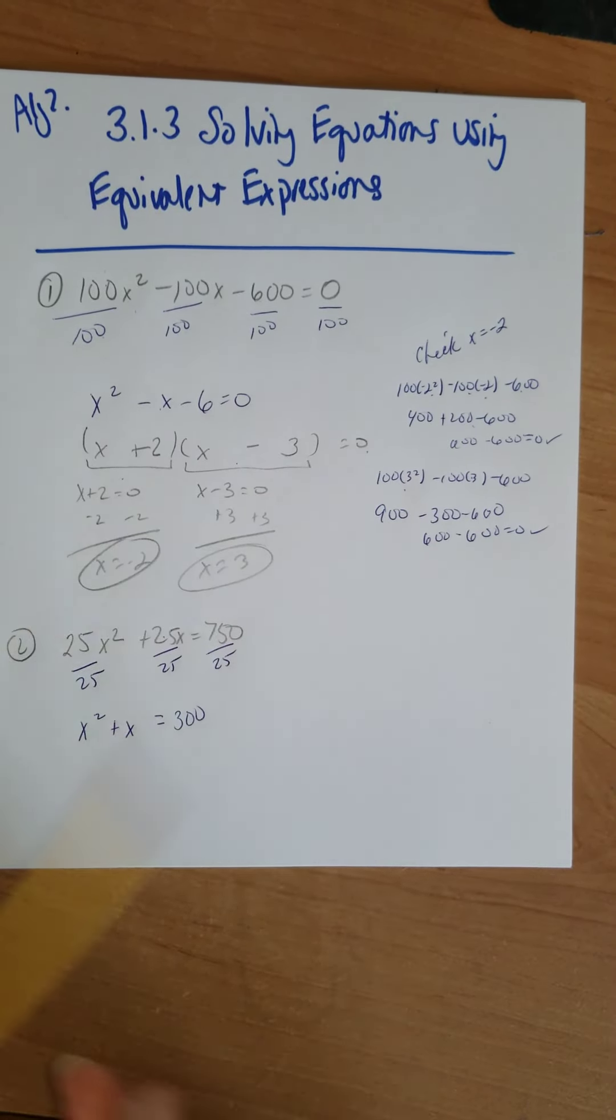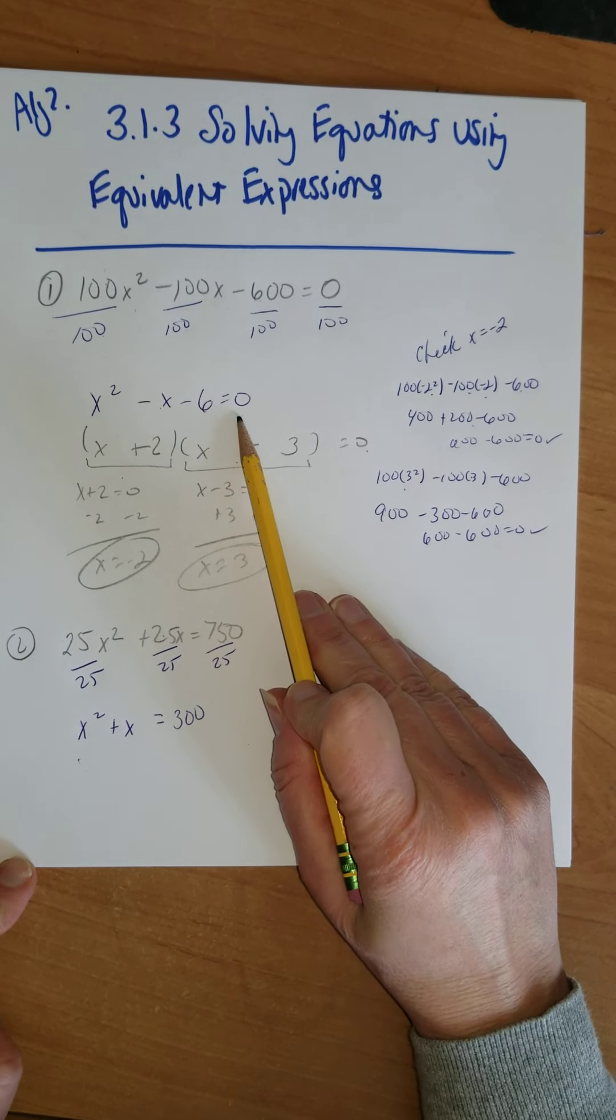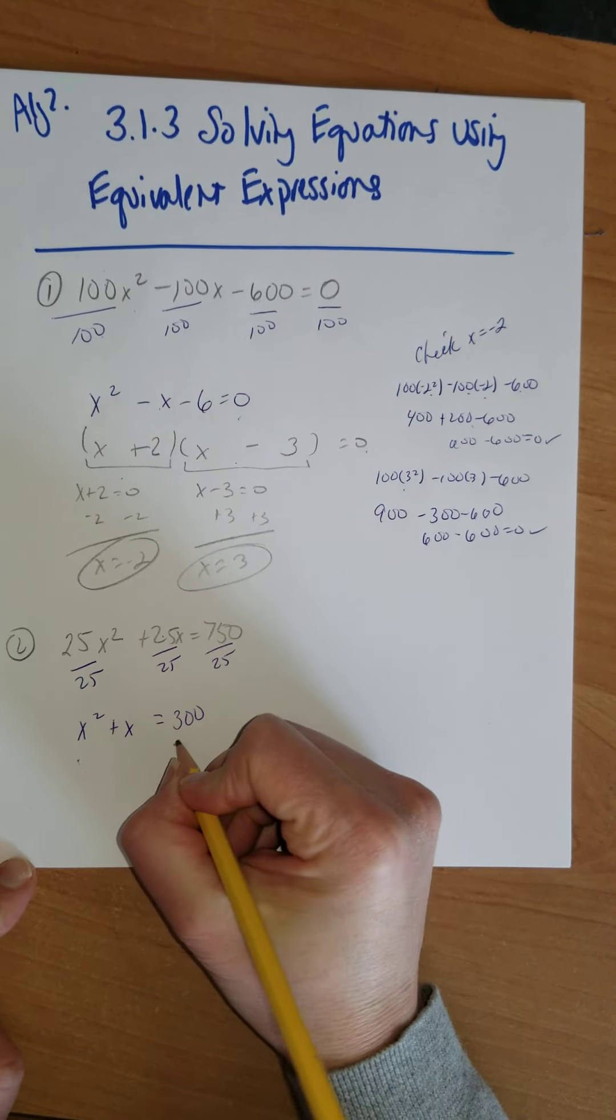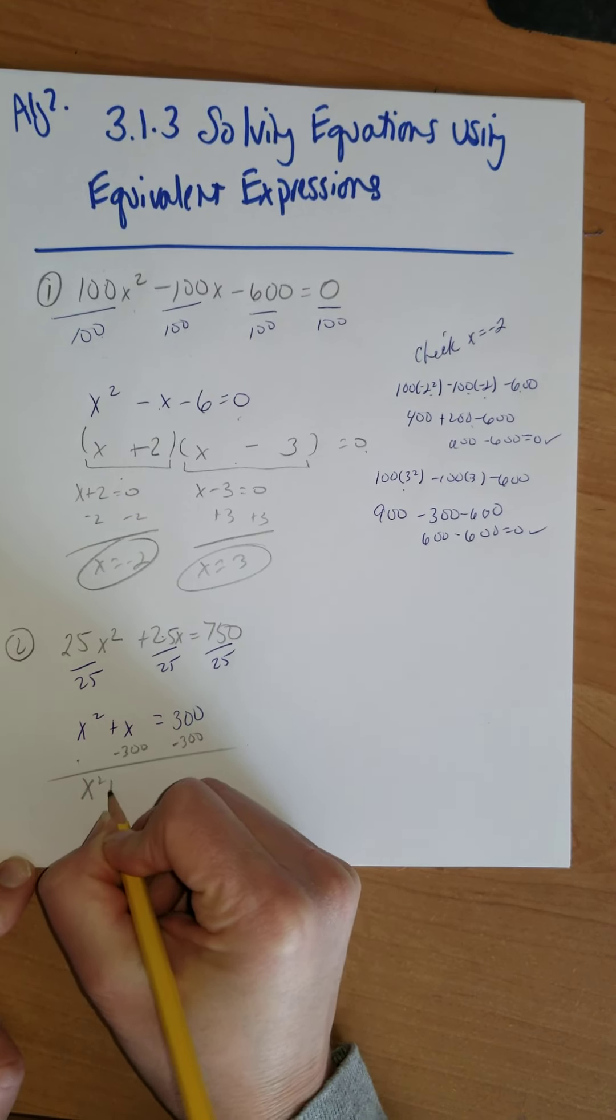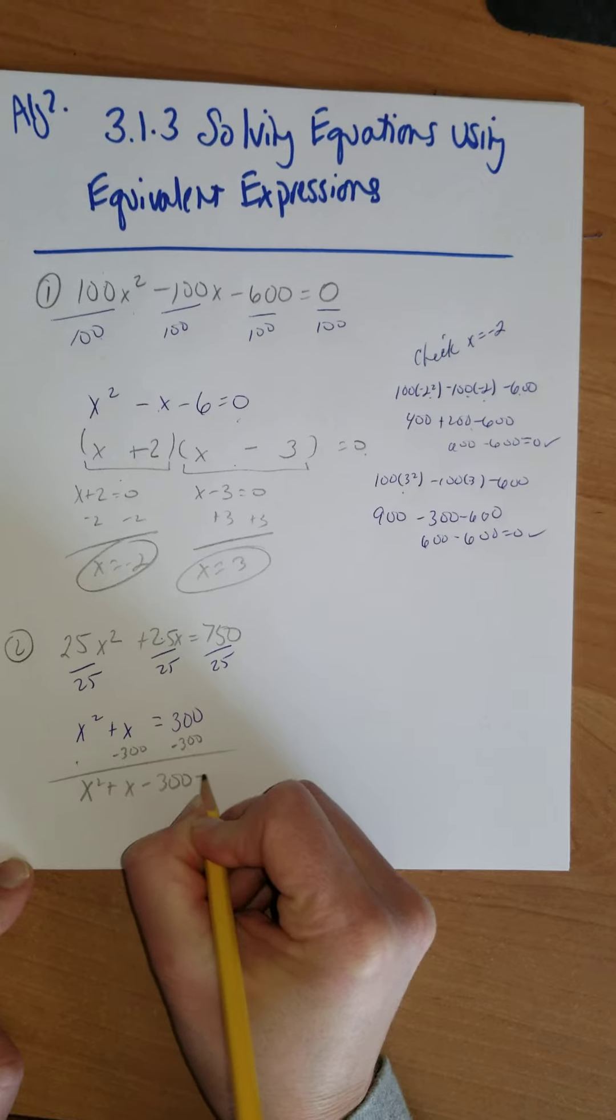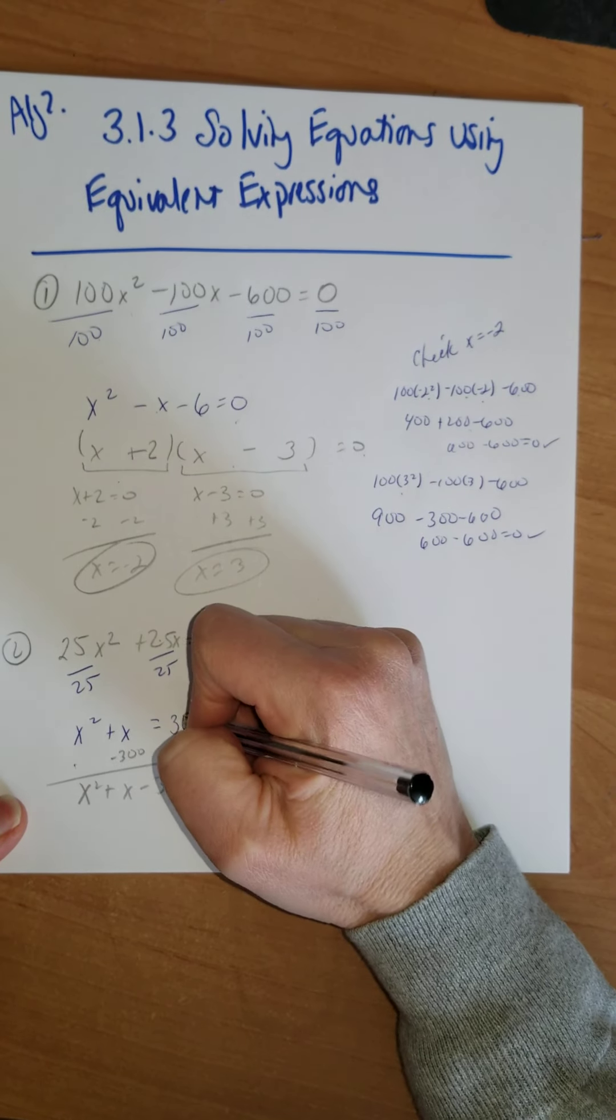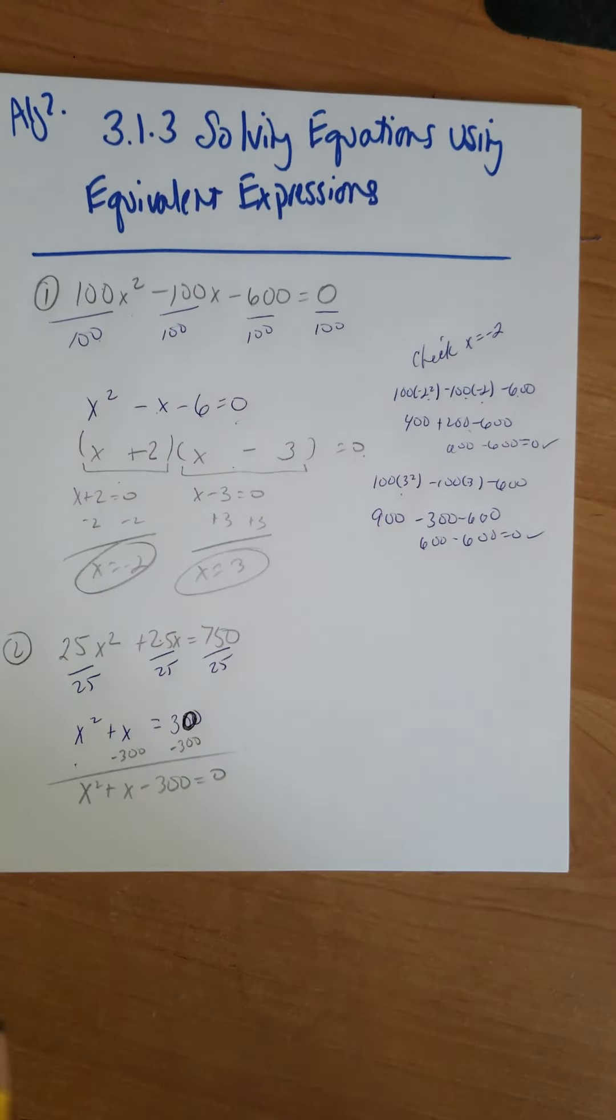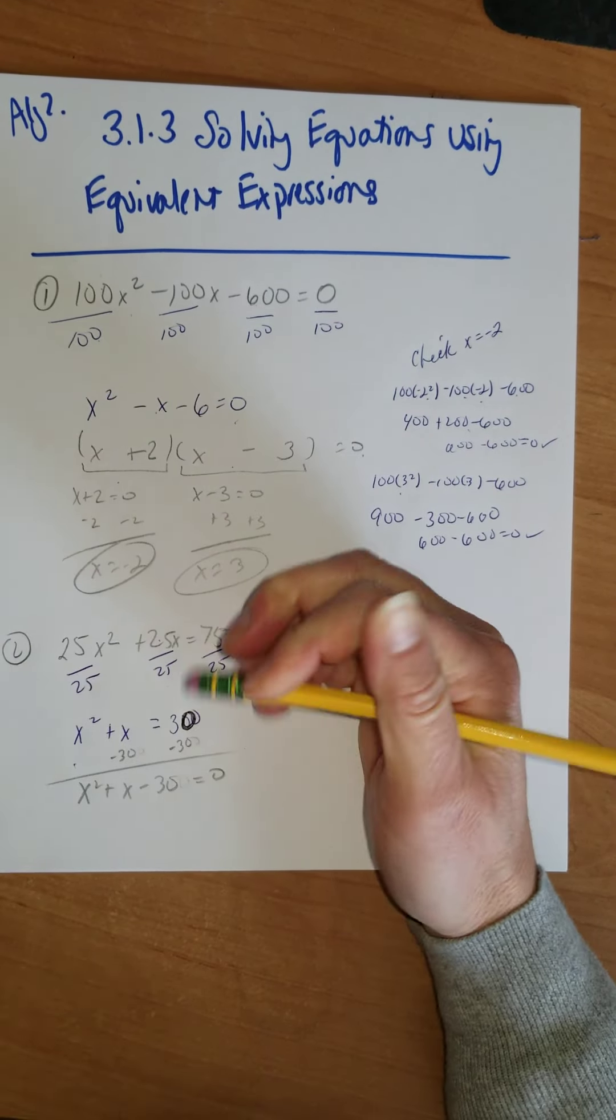So for this one, I'm going to try to factor it, but in order to use the zero product property, I have to set this equal to zero. So let's subtract 30. x² + x - 30 equals 0. Sorry about that mistake earlier.